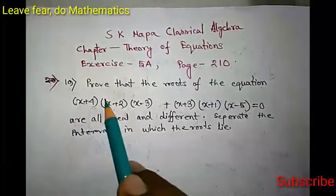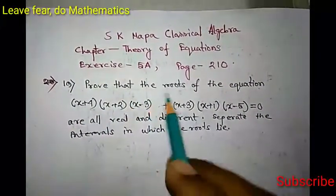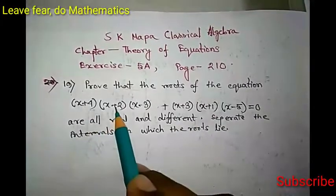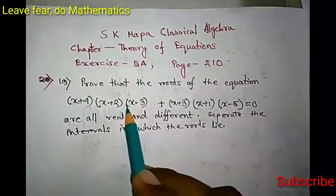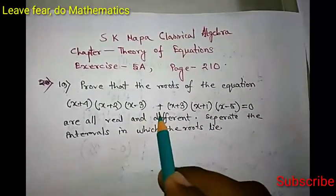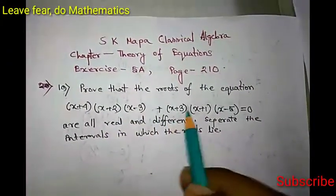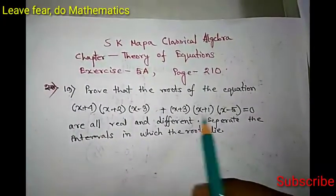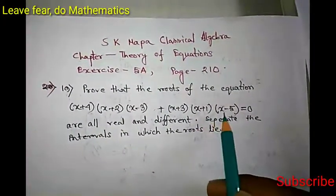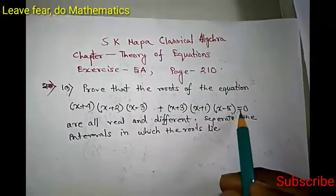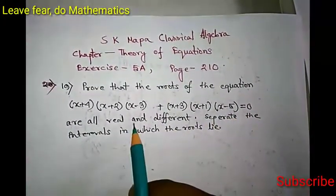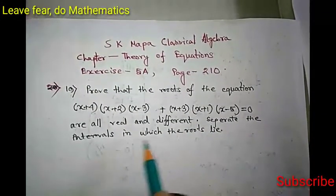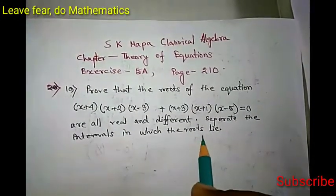The problem says: prove that the roots of the equation (x+4)(x+2)(x-3) + (x+3)(x+1)(x-5) = 0 are all real and different. Separate the intervals in which the roots lie.